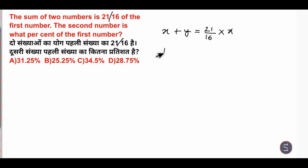16x plus 16y equals 21x. Now 16 will come here. Here is 16y. Minus. 21 minus 16 is 5x.